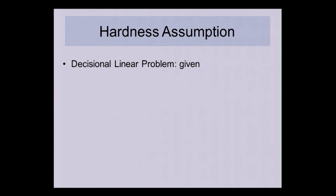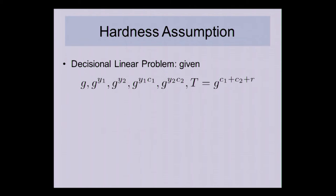We prove this using the decisional linear (DLIN) problem, which is the same assumption GPSW is proven under. Given the following elements where y_1, y_2, c_1, c_2 are chosen at random, you're given a challenge term T where T equals g^(c_1 + c_2 + R), and R is either a randomly chosen exponent or zero. If R is random then T is random, and if R is zero then T is related to the previous elements because of the repeated c_1 and c_2.